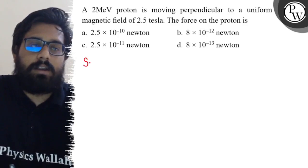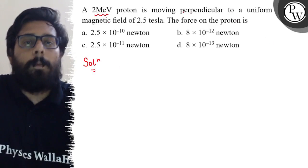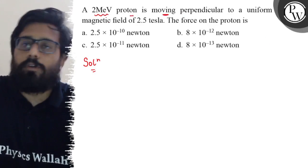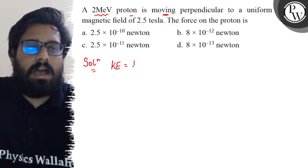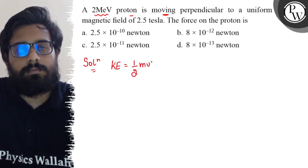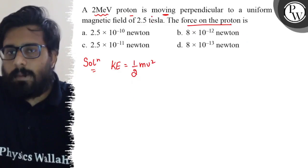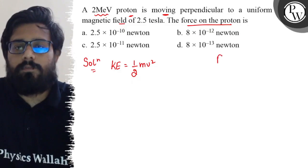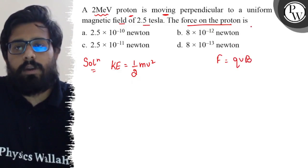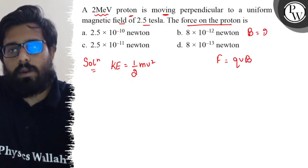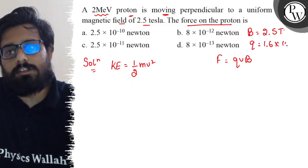So what are the given data we have? We have the energy — since the proton is moving, this is kinetic energy, which can be written as half m v square. The force on a charge particle moving in a magnetic field will be F = QVB. Here we have B value of 2.5 tesla, and the charge of the proton is 1.6 into 10 to the power minus 19 coulombs.